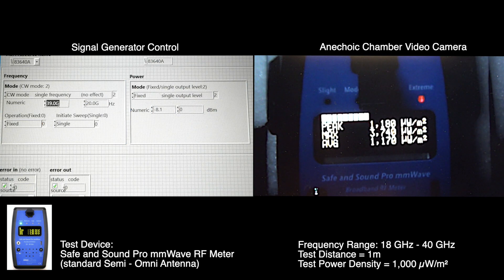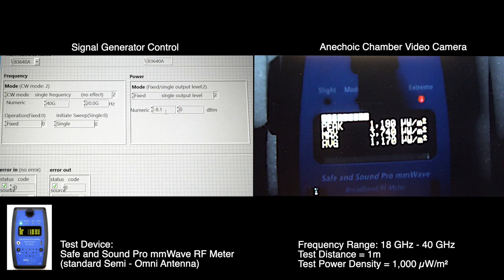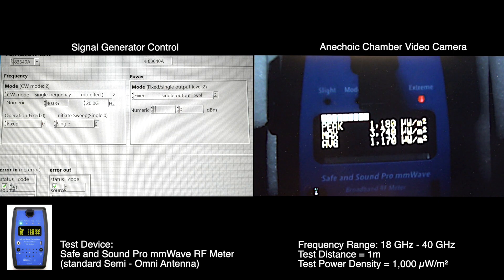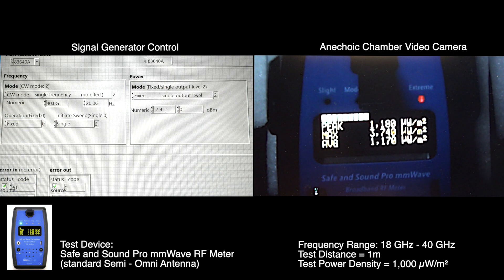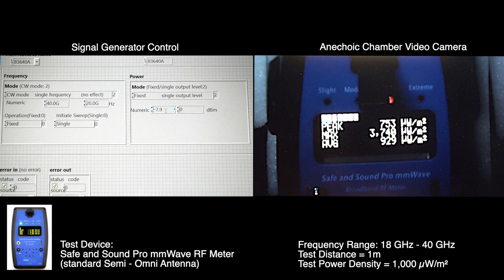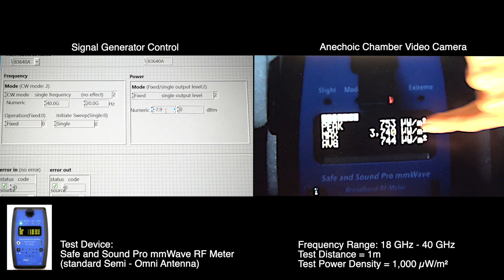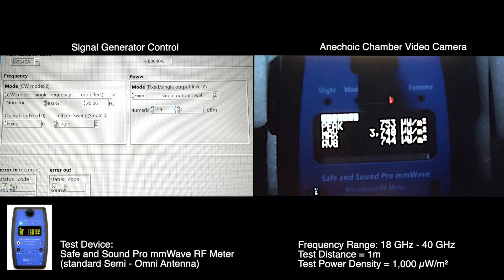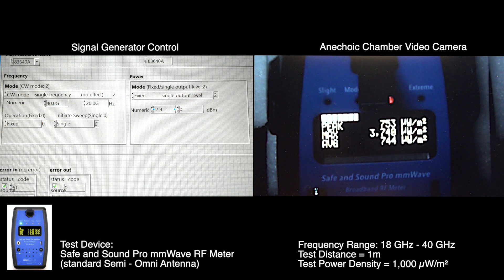And finally, our top end of the meter that we're capable of testing here, 40 gigahertz, we need minus 7.9 dBm of transmitter power. And we are at 744 microwatts per square meter. If we had equipment right now that could go above 40 gigahertz, there is very little question in my mind that we would see some response, probably up past 41 gigahertz on this meter.